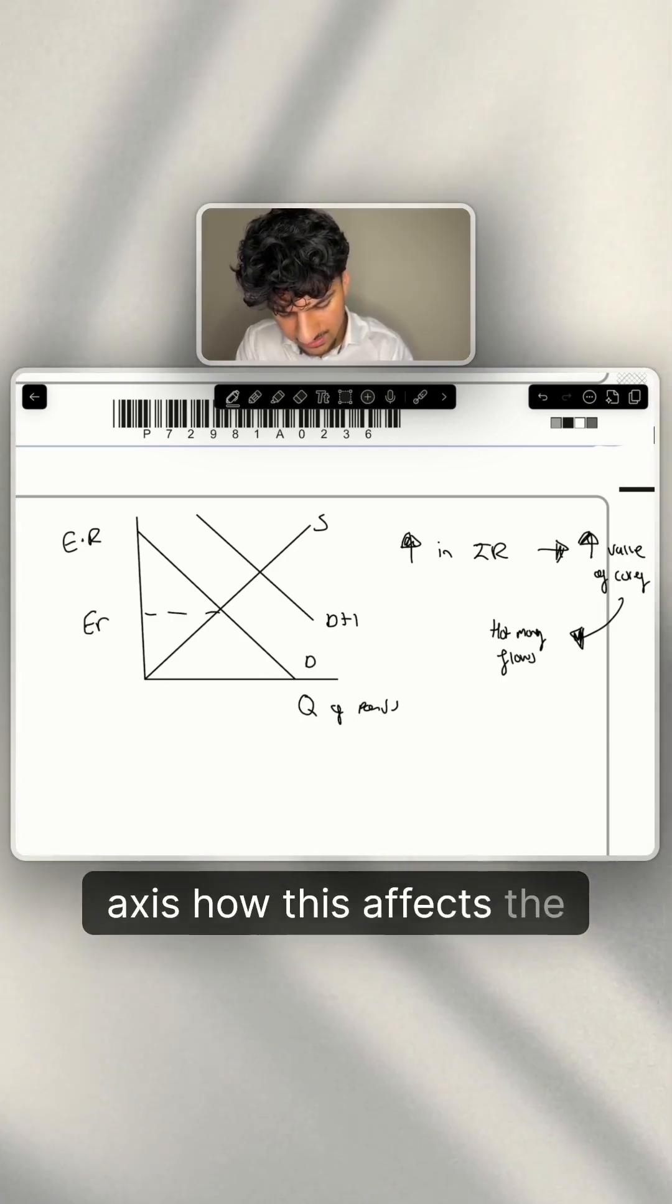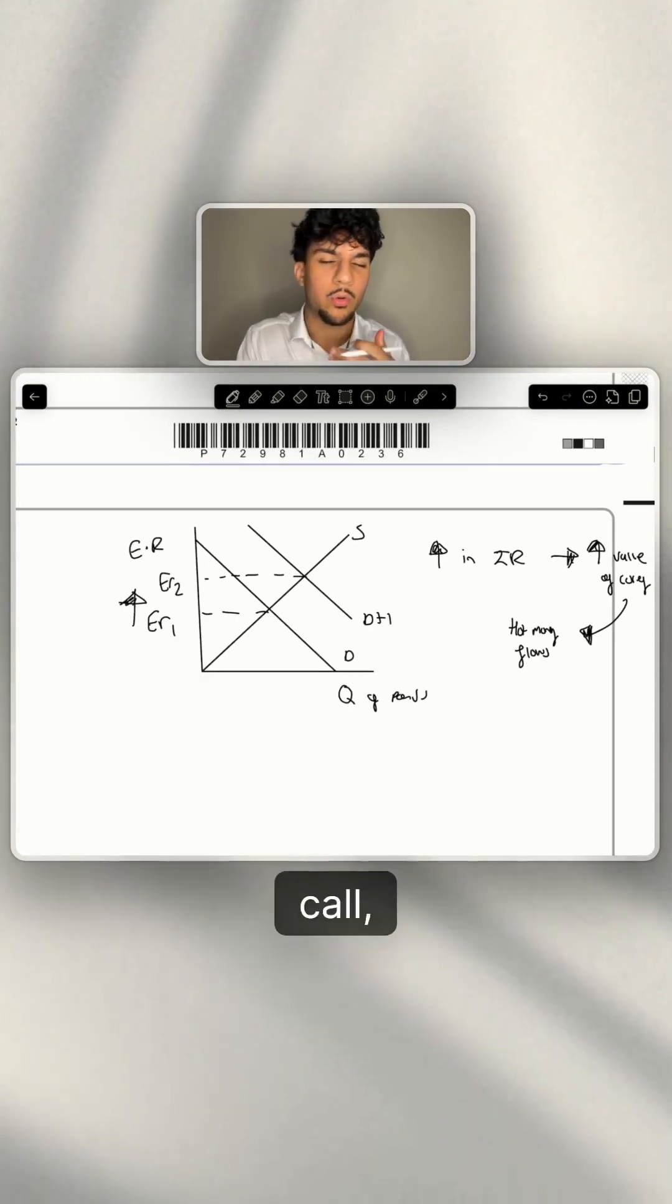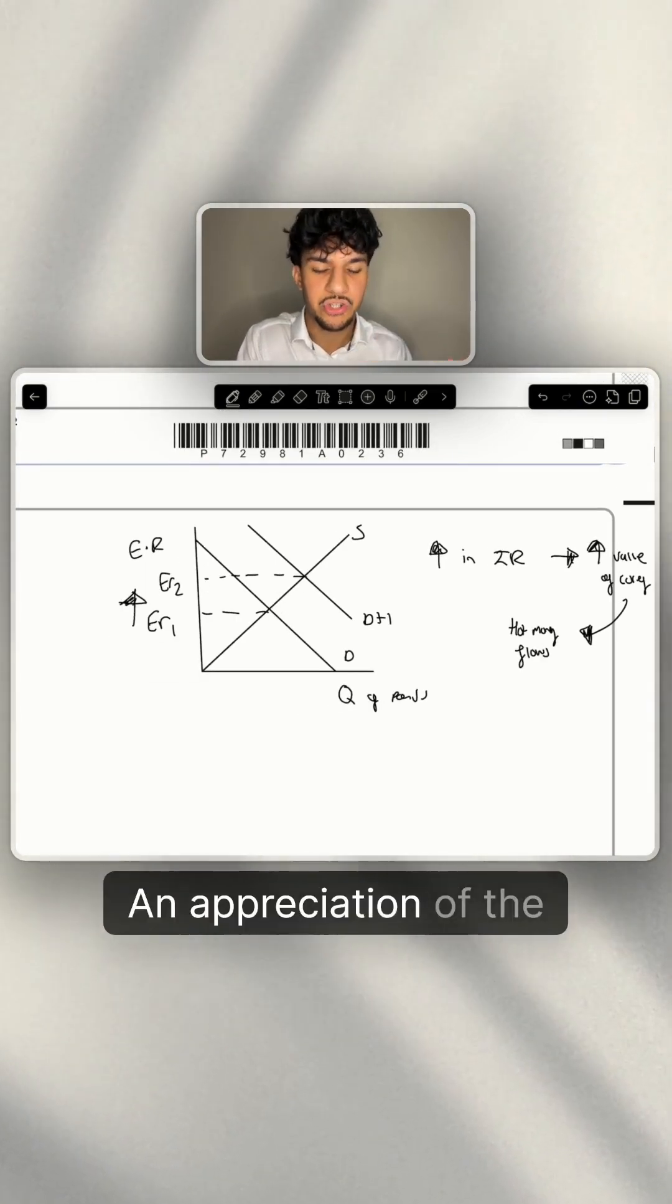And now let's see on this y-axis how this affects exchange rate. So exchange rate goes from ER to ER2. So basically an increase in exchange rate, or what do we call an increase in the exchange rate, an appreciation of the exchange rate.